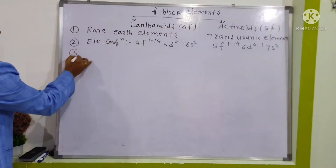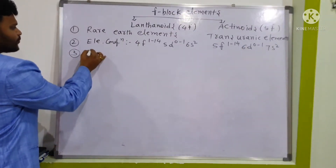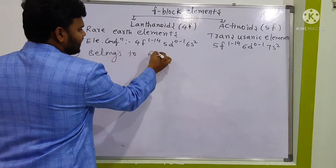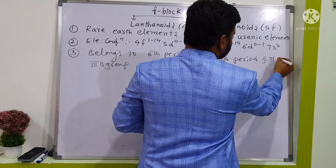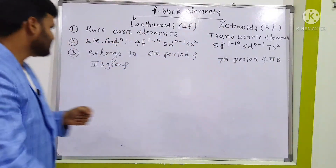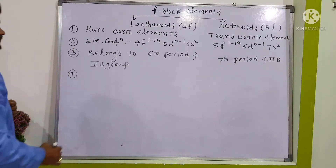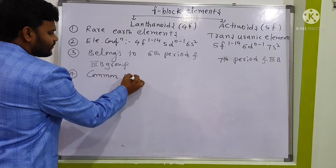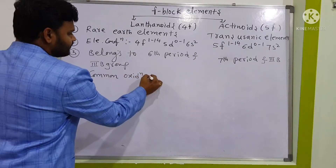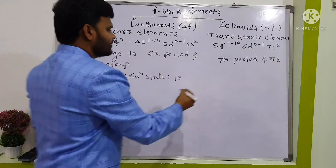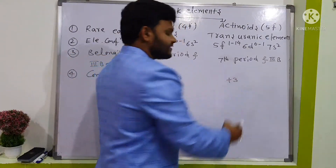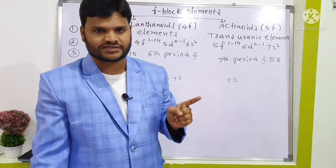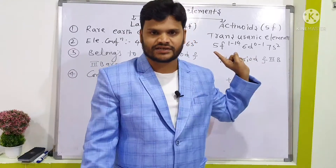Third point: lanthanoids belong to the 6th period, 3rd group. The common oxidation state for F block elements is +3, whereas for D block elements the common oxidation state is +2.